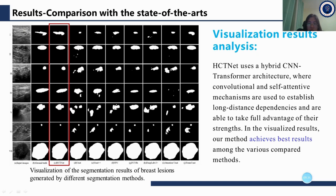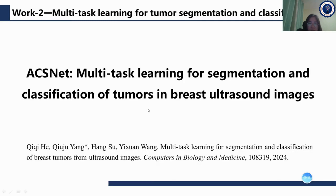HCT-net uses a hybrid CNN-Transformer architecture where convolutional and self-attention mechanisms are used to establish long-distance dependencies, taking full advantage of both their strengths.